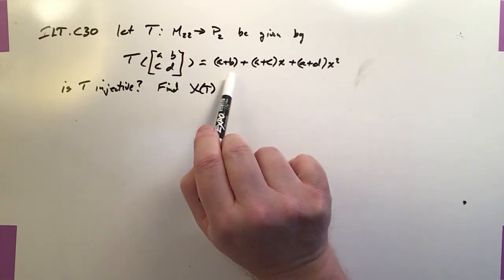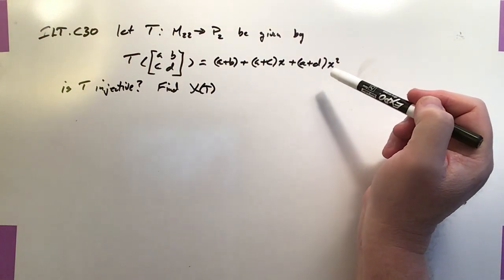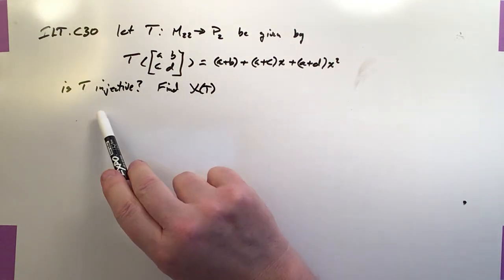So it takes A, B, C, D, and it maps it into a polynomial function like this. So it asks us two questions.